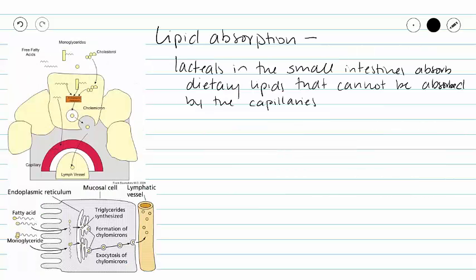Thirdly, in our small intestines we have many blood capillaries that are going to absorb our nutrients. However, our dietary lipids cannot be absorbed into our bloodstream. So these lipids are put into little packages called chylomicrons, which are expelled from the cell via exocytosis. They then move into our lacteals, which are a portion of a lymphatic vessel in the small intestine.